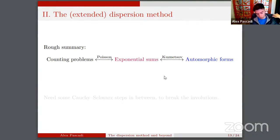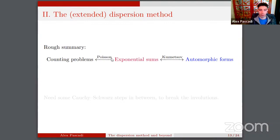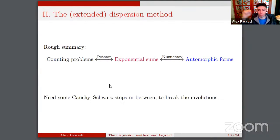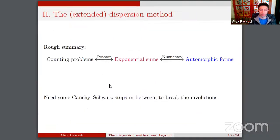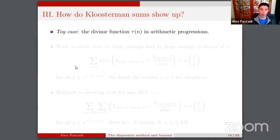Overall, a rough summary: we start from counting problems in number theory, reduce them to exponential sums, and these exponential sums relate to automorphic forms. We can go back and forth between counting problems and exponential sums, and between exponential sums and automorphic forms, with Cauchy-Schwarz and other combinatorial manipulations in between. The simplest setting where I know Kloosterman sums show up is the case of the divisor function τ(n) in arithmetic progressions.